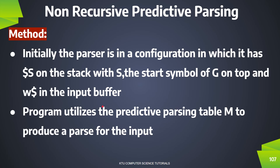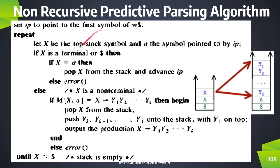We keep $ at the bottom of the stack. Then set IP to point to the first symbol of w$. If w$ is the input string, we set IP to point to the first symbol. We denote the top stack symbol as X and the symbol pointed to by IP as a.